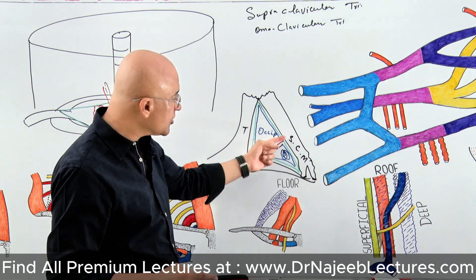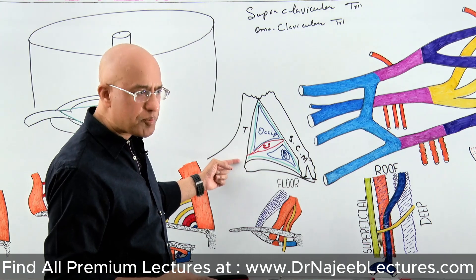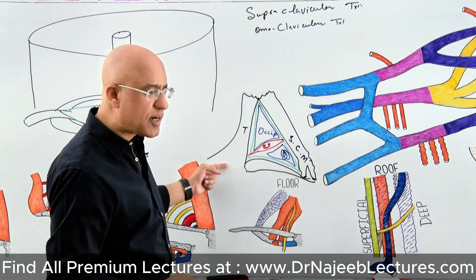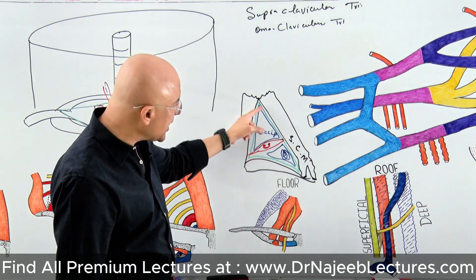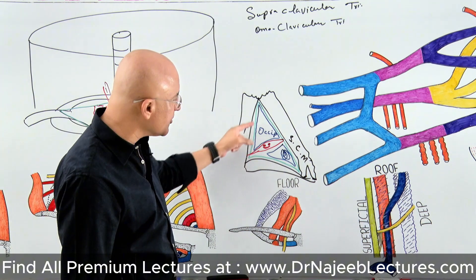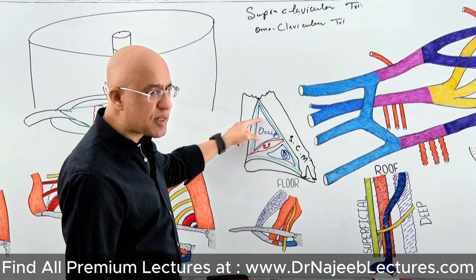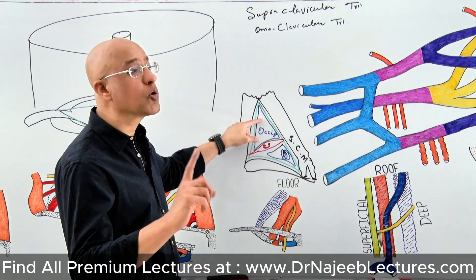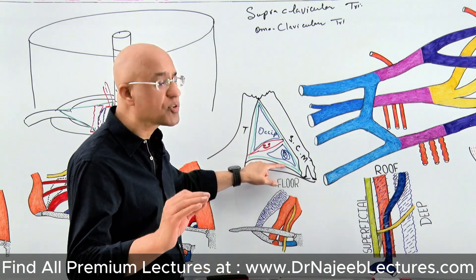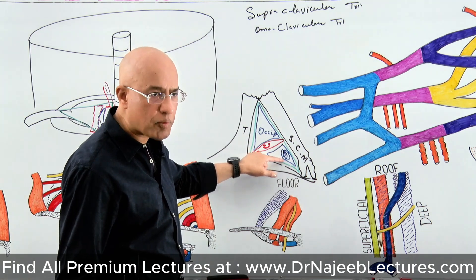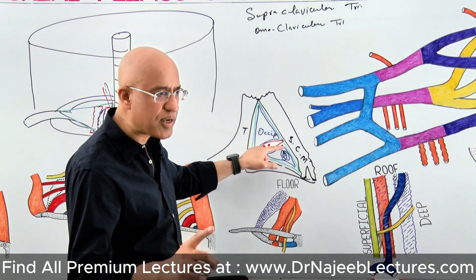The inferior belly of the omohyoid crosses from the sternocleidomastoid towards the trapezius, eventually attaching to the scapula. When it crosses obliquely, the posterior triangle is divided into an upper triangle and a lower triangle. The superior triangle is the occipital triangle, which we are not discussing today. The lower triangle — the subclavian triangle — we will discuss in detail because it is related to the brachial plexus.